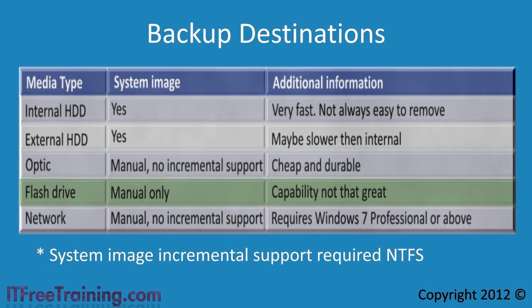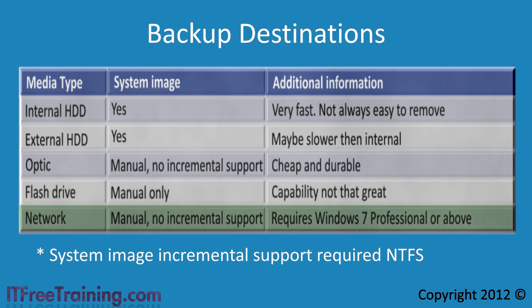The next type of media is USB flash drives. These are small and easy to carry, but the capacity is not that great. Removable media like USB flash drives do not support system image backup using the scheduling feature. With the limited amount of space on the flash drive, it is unlikely that you would want to store a system image backup on it anyway. Lastly, you can store your backup on a network share such as a network attached storage device or on a file server. The speed of the backup will be determined by how fast your network is. The disadvantage of a network backup is that it only supports one system image backup using the scheduling feature.